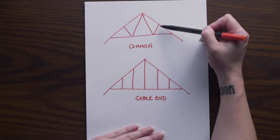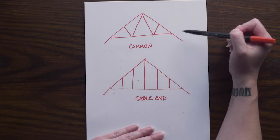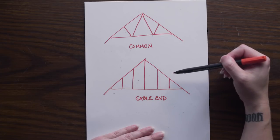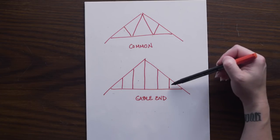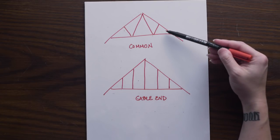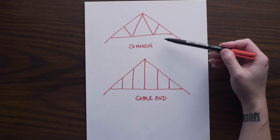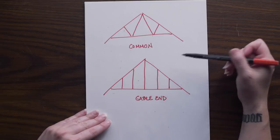Throughout the structure we will have a different type of web within our common truss, and because they are configured differently, we need to make sure that we count them differently when doing our calculations. Just like in floor framing where our ends are different because we have a band board instead of a common joist, we'll have gable end trusses instead of common trusses on our ends.